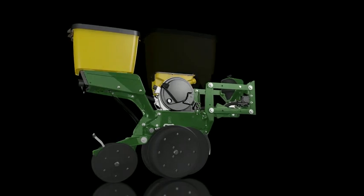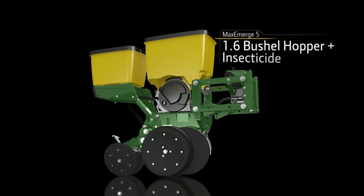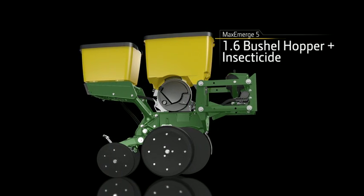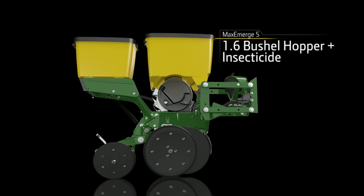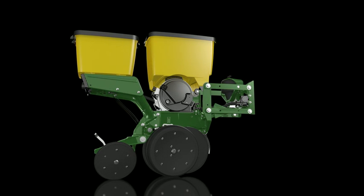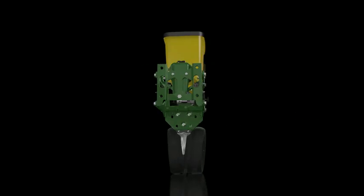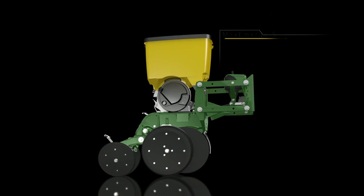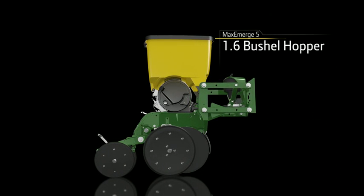Speaking of raising productivity, the insecticide option is now available on the 1.6 bushel hopper with pro shaft drive to rid you of chains, bearings, and shafts, saving you time and maintenance costs. Or get MaxEmerge 5 in the 1.6 bushel without insecticide, if you prefer.